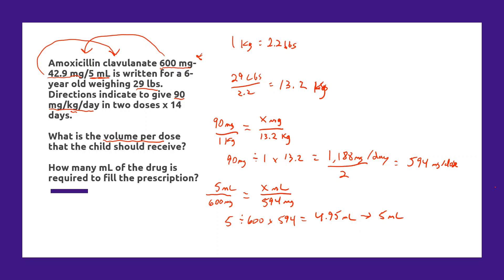The final question is, how many milliliters of the drug is required to fill the prescription? If we know we're going to give a 5 milliliter dose, and we're giving that dose 2 times a day times 14 days, our total volume is going to be 5 times 2 times 14, which equals 140 milliliters. So that would be the solution to this question.